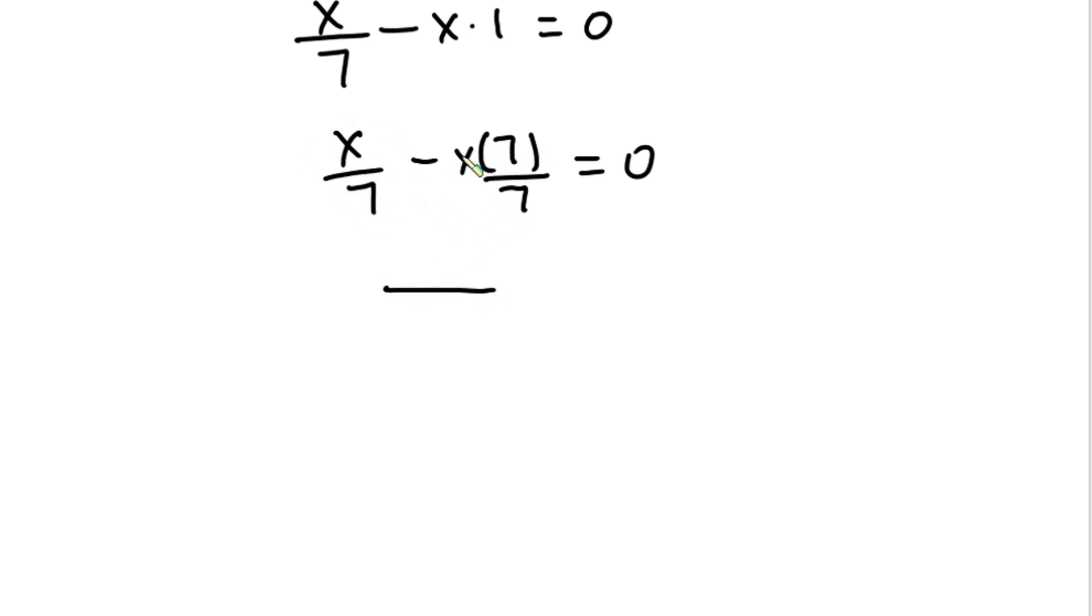So we have 7 here, then we have x minus this whole thing will be 7x, right? So we're gonna have x minus 7x is equal to zero.